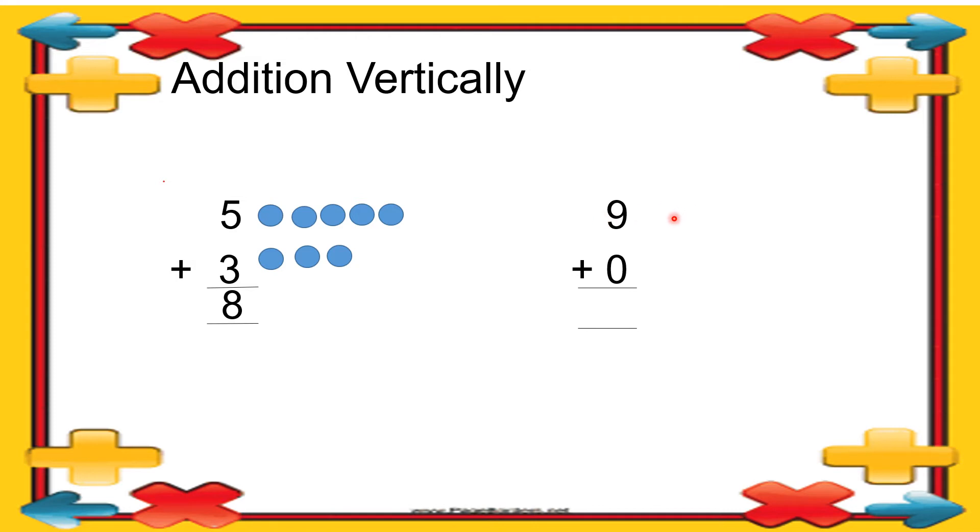My next question is 9 plus 0. 0 means no number for adding. First we will draw 9 balls: 1, 2, 3, 4, 5, 6, 7, 8, and 9. No more number is there for adding, so we get answer same 9.